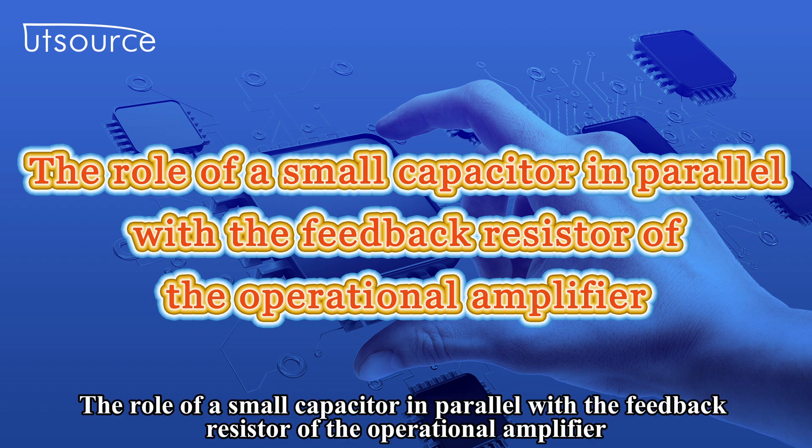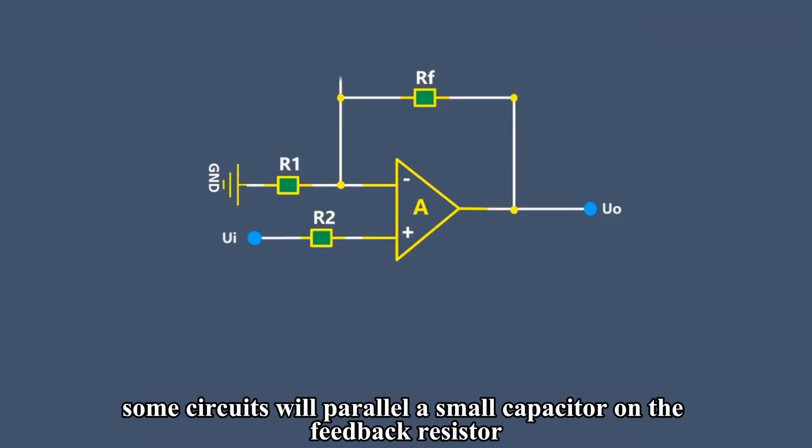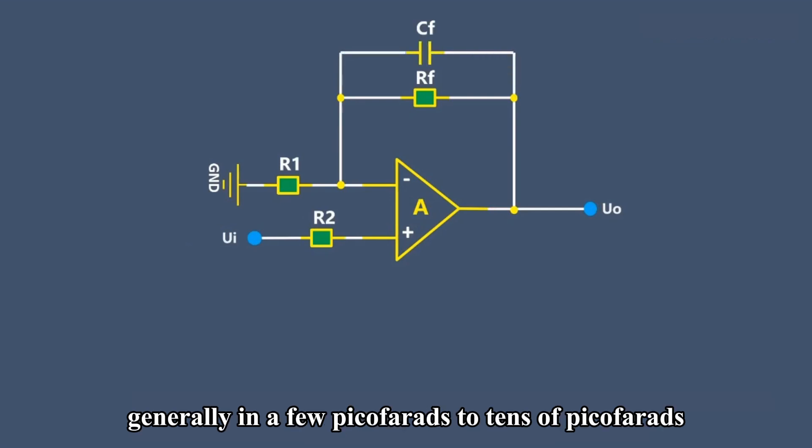The role of a small capacitor in parallel with the feedback resistor of the operational amplifier. This is an in-phase proportional operational amplifier circuit. RF is the feedback resistor. Some circuits will parallel a small capacitor on the feedback resistor, generally in a few picofarads to tens of picofarads. So what is the role of this capacitor?